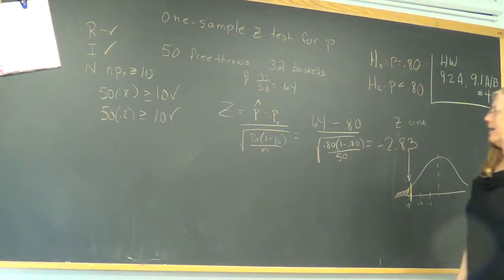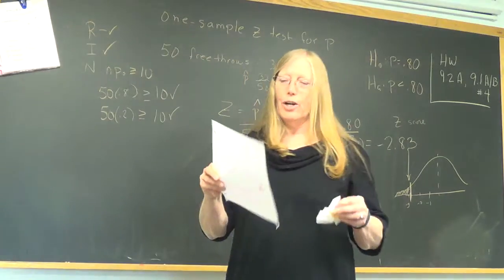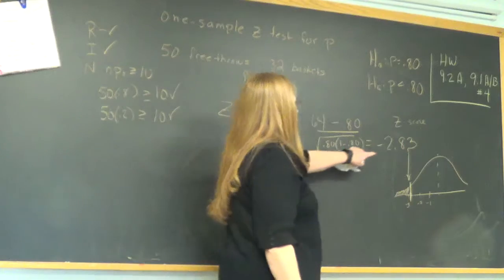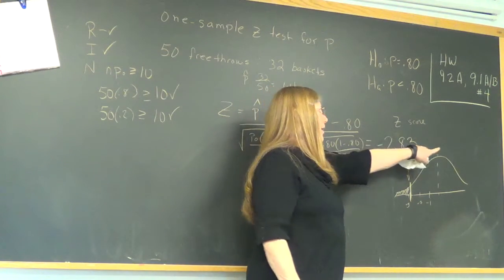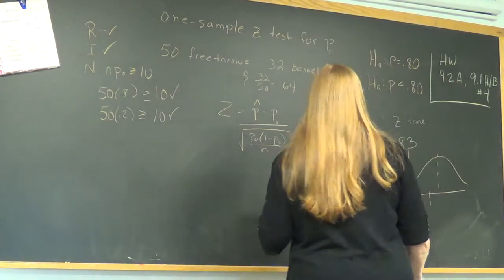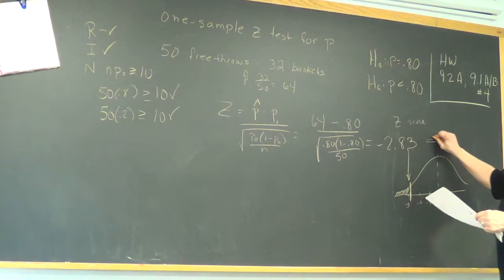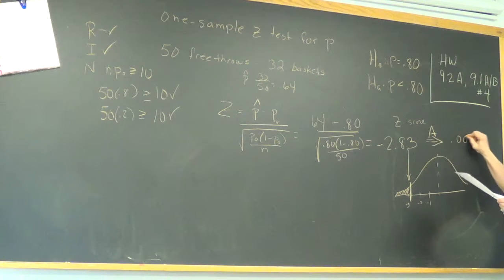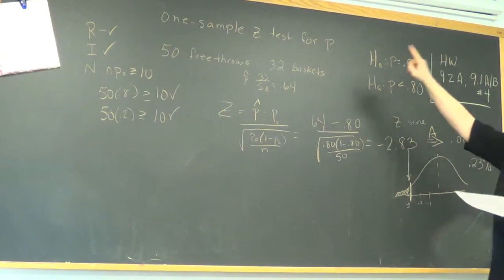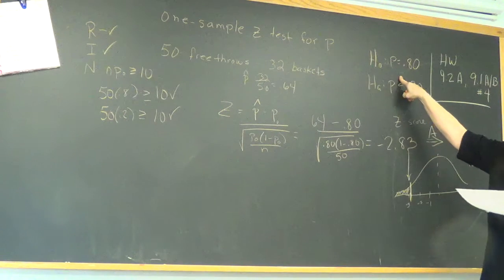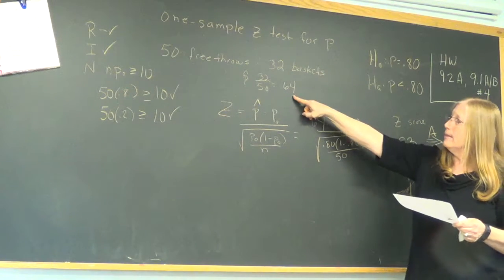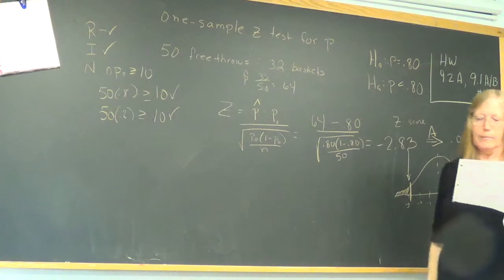The table entry for z is the area under the standard normal curve to the left of z. We learned this early on, right? So when I went to chart A and I went along the margin until I found negative 2.8 and then I went over 3, chart A came out to a very small P-value. So from here I went to chart A and I got 0.0023.